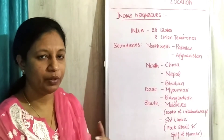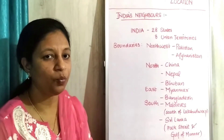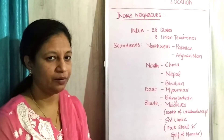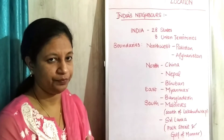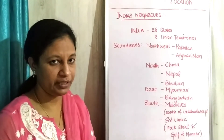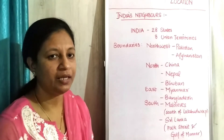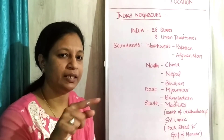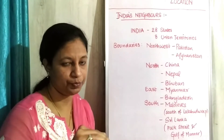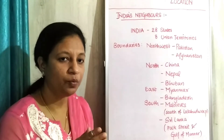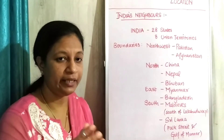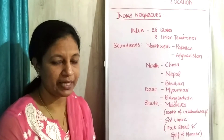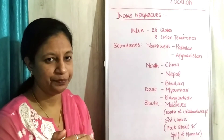Some neighbours are a little further away because they are in the waters, like Sri Lanka — we are not land-wise attached there. We are separated from Sri Lanka, and there is a small area where water protrudes into the land, which we call a gulf.